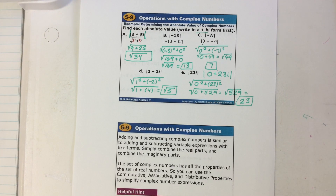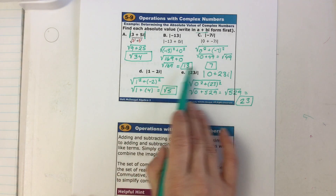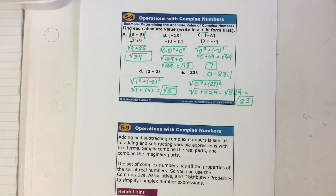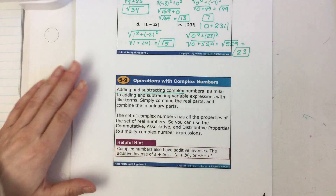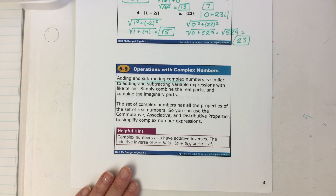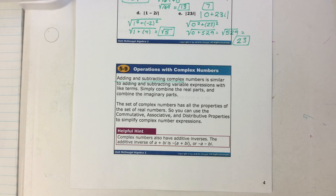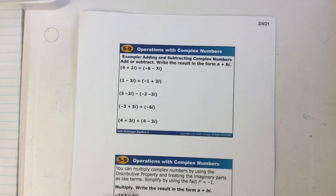This whole section 5.9 is showing you all the things you can do with complex numbers. So far we have graphed them on a complex plane and figured out the distance from zero — that's what you're doing by finding the absolute value. If you are adding or subtracting complex numbers, it's just like combining like terms: you combine the real parts with the real parts and the imaginary parts with the imaginary parts. Let's see what this looks like.